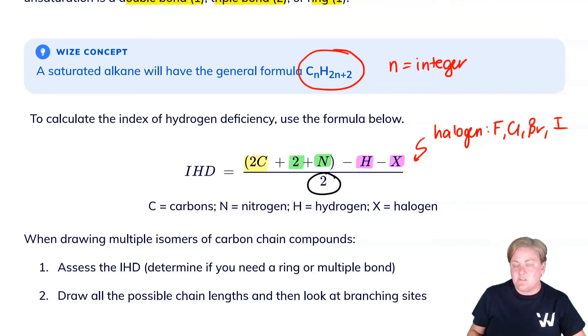When drawing a molecule, you want to assess the index of hydrogen deficiency to determine what degrees of unsaturation you have. Should you be incorporating a double bond or a ring? Should you be thinking about triple bonds? Then draw all the possible chain links and look at branching sites. With constitutional isomers, you can end up with a lot of versions of the same molecule. A really good self-check is to always come back and double check your hydrogen deficiency index to see whether you're following the right structure.